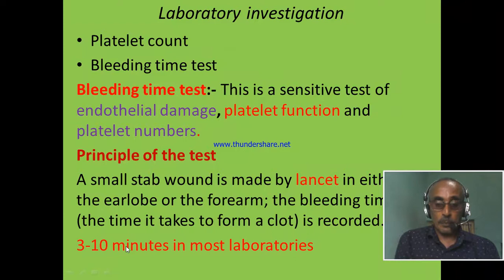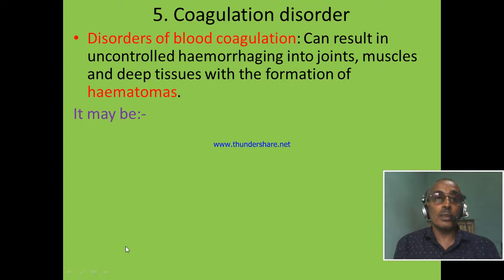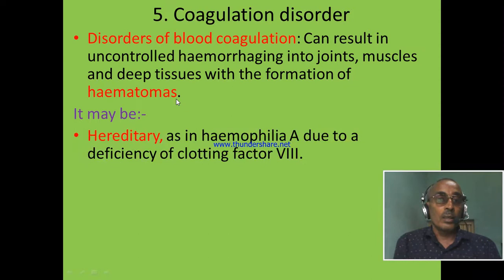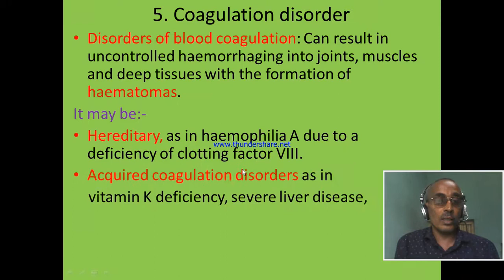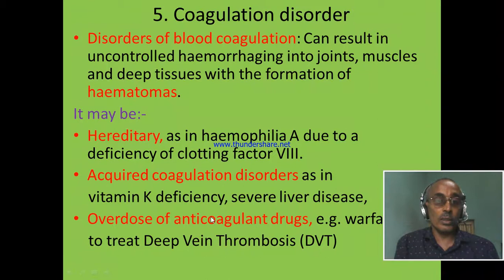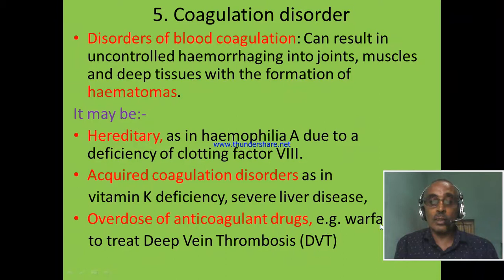Coagulation disorder is the fifth hematologic test. This can result in uncontrolled hemorrhaging or bleeding into the joint, muscle, other deep organs, and formation of hematoma. The cause of coagulation disorder can be hereditary, like hemophilia — deficiency of clotting factor 8. The second cause is acquired coagulation disorder, as in vitamin K deficiency and severe liver disease. The third cause is overdose of anticoagulant drugs like warfarin, a type of treatment given to patients who develop DVT — a dangerous condition where blood clots in the vein. If warfarin is given in overdose, coagulation disorder can occur.